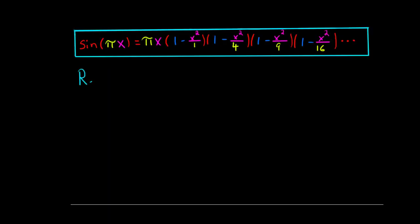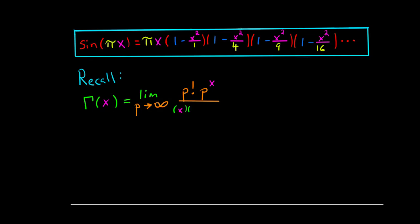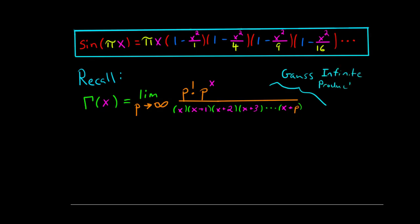Now I'll ask you to recall something about the gamma function — specifically, our infinite product definition of the gamma function, which states that gamma of x equals the limit as p approaches infinity of p factorial times p to the x, all over x times (x plus 1) times (x plus 2) times (x plus 3) and so on, all the way up to (x plus p). This is the Gauss infinite product formula for the gamma function.